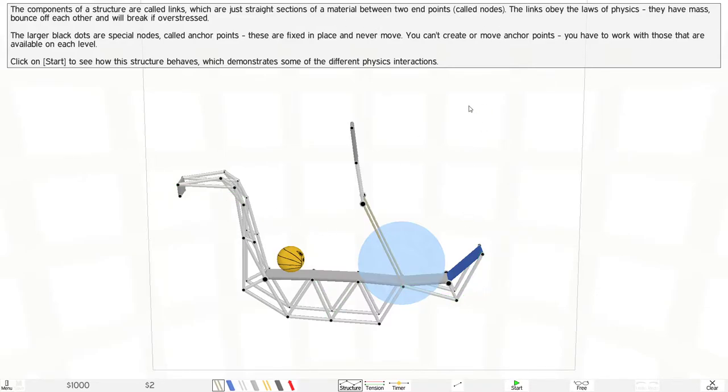These are the nodes, and the links obey the laws of physics - they have mass, bounce off each other, and will break if overstressed. This is like a physics education game. The black dots are special nodes.